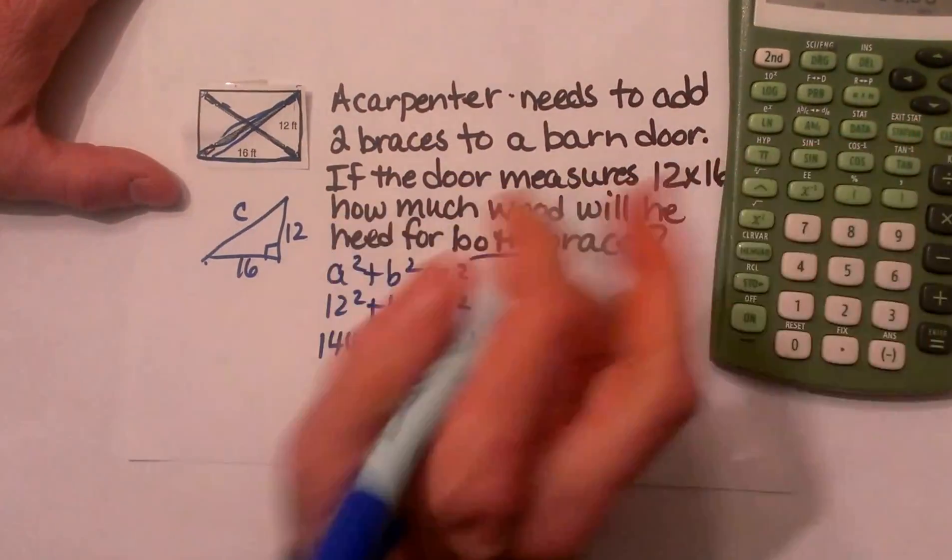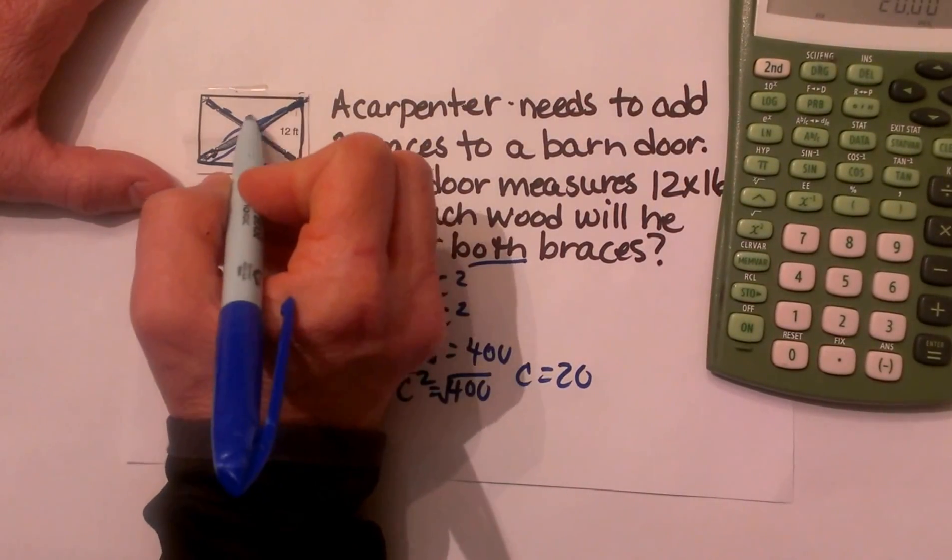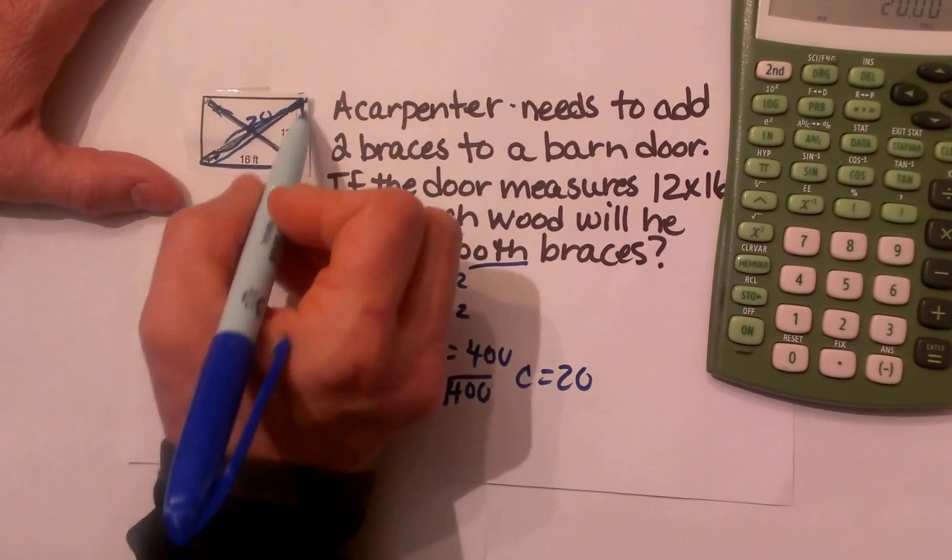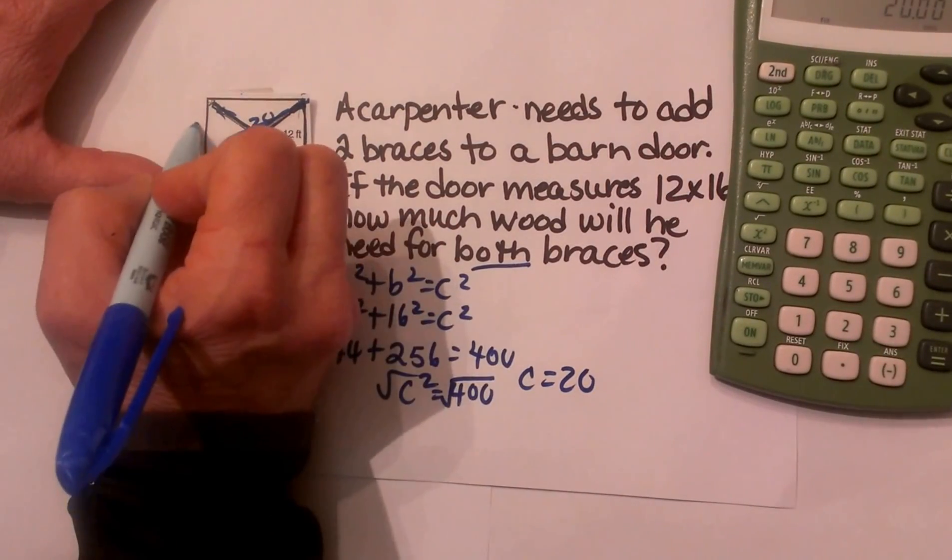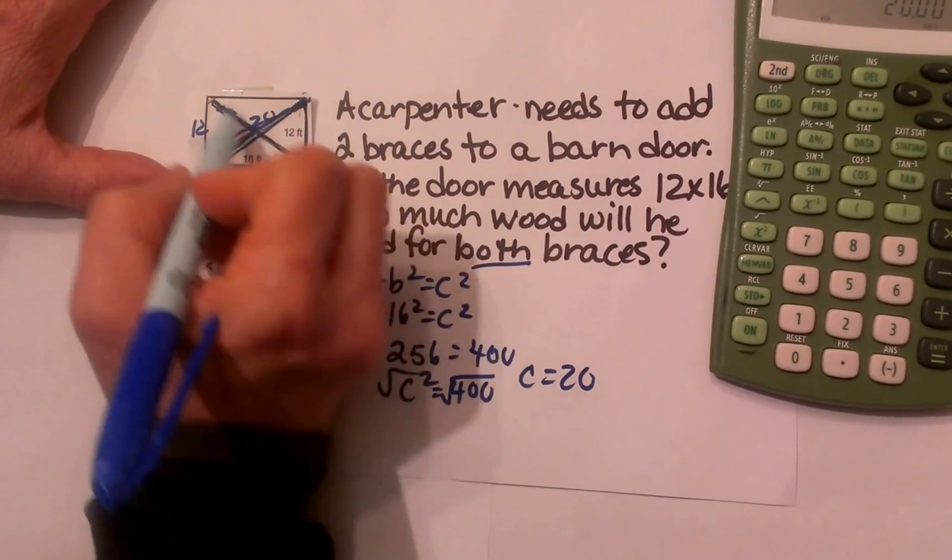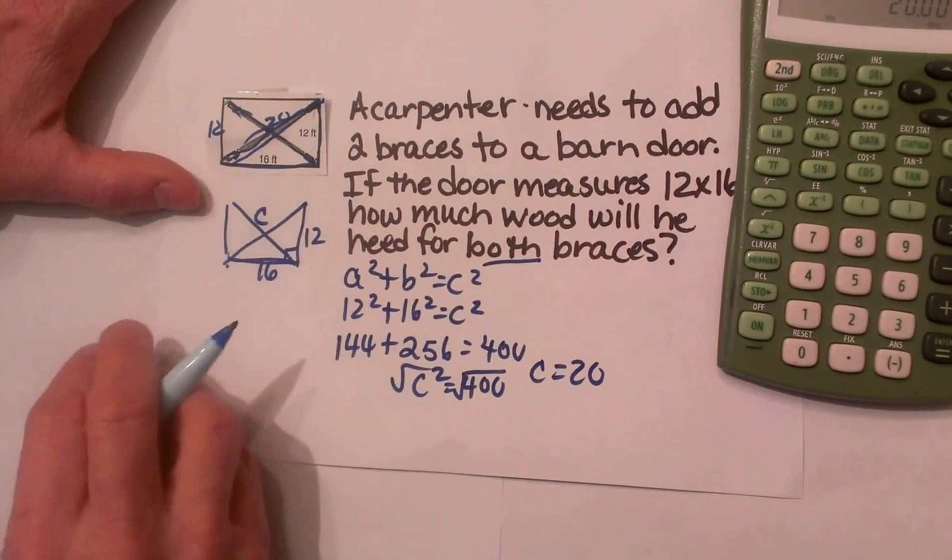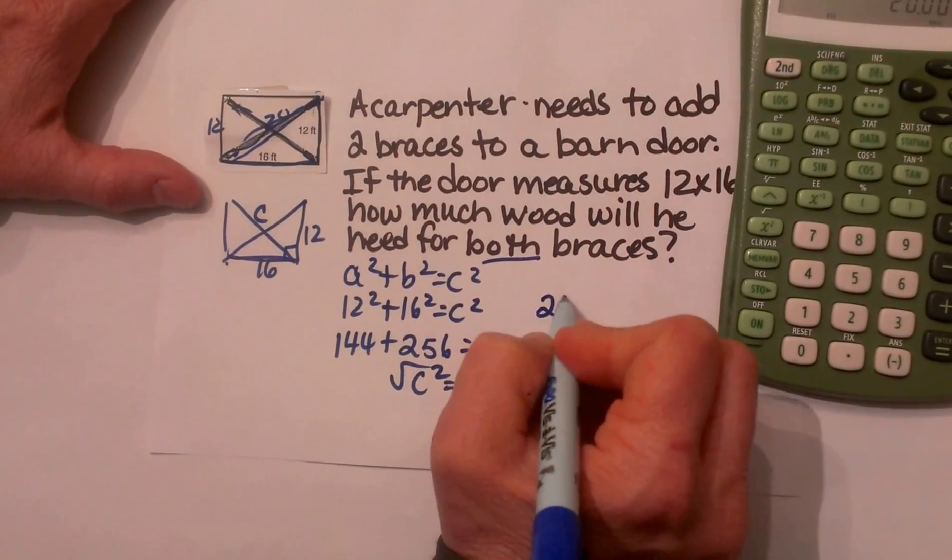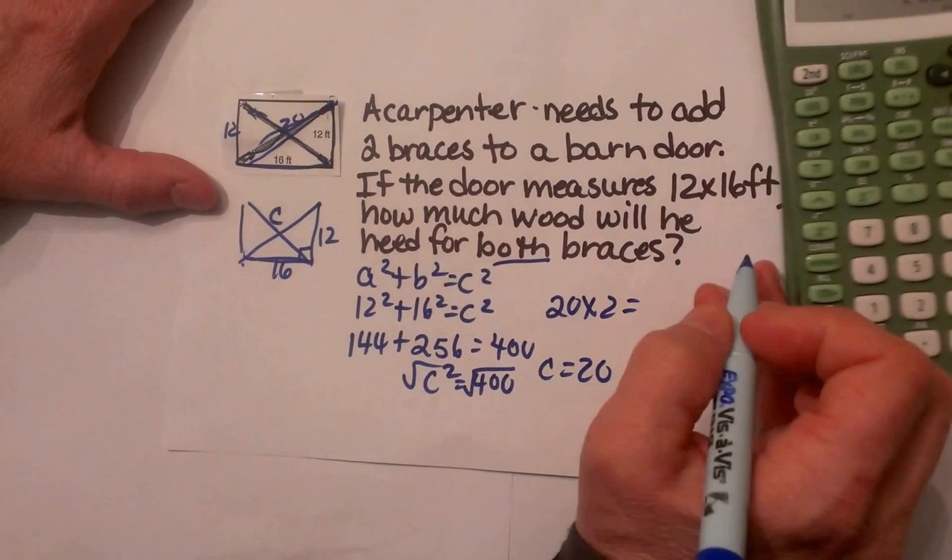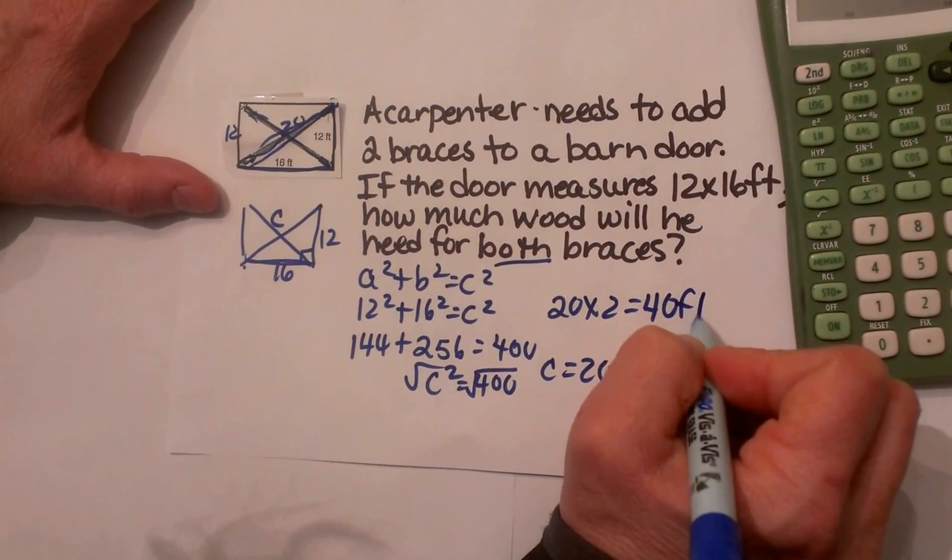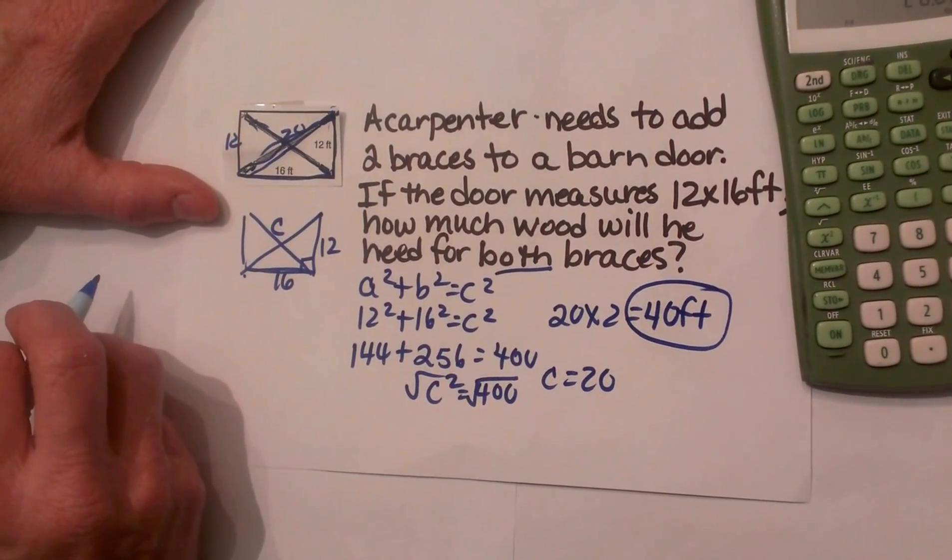Now that is only one of my braces. So let us go back and look at the problem again. One brace is 20 so the other one, this is a rectangle and in a rectangle the diagonals are congruent because this side would also be 12 and we would have another right triangle identical to it just reflected. So that means I am going to take 20 and I am going to double it to get how much wood I need. So I am going to need 40 feet of wood to complete the barn door. There you go. Hope this was helpful.